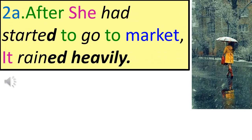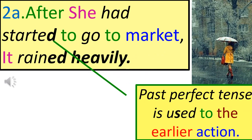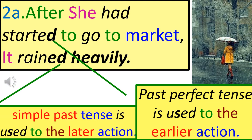Example 2: 'After she had started to the market, it rained heavily.' Past Perfect Tense is used for the earlier action; Simple Past Tense is used for the later action. The action which occurred earlier is expressed in the Past Perfect Tense, whereas the action which occurred later is expressed in the Simple Past Tense.